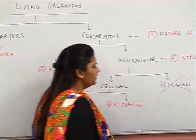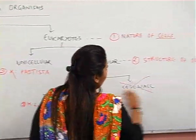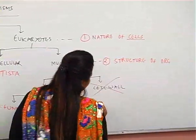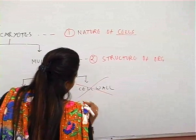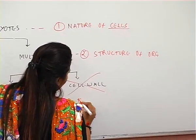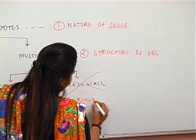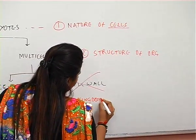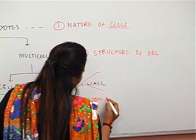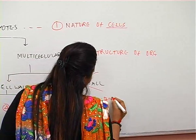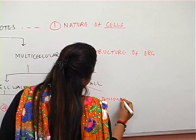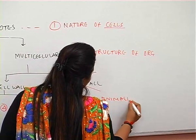Under cells not having a cell wall comes the fifth one — Kingdom Animalia — the kingdom of animals.